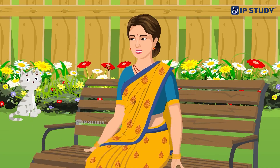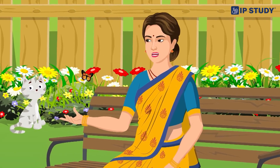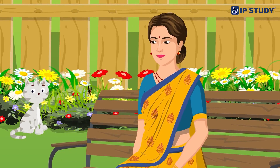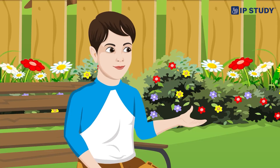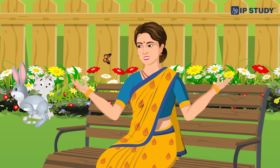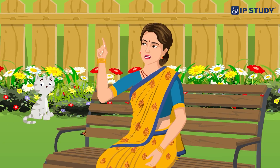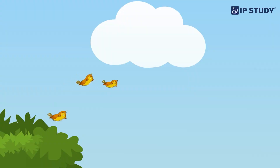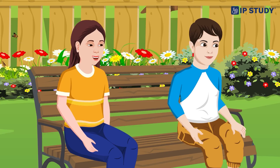Let's start by counting the trees. Aman, why don't you give it a try? Okay — one, two trees, three trees, four trees, five, six, seven, eight, nine, ten. There are ten trees!